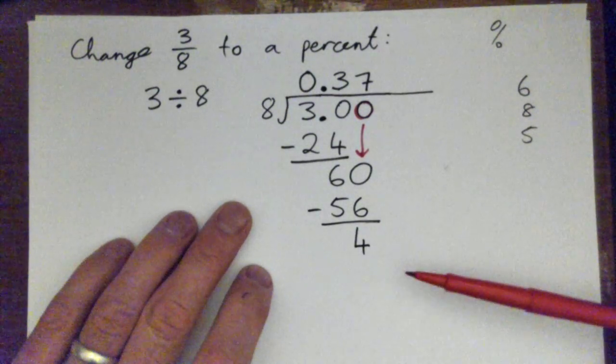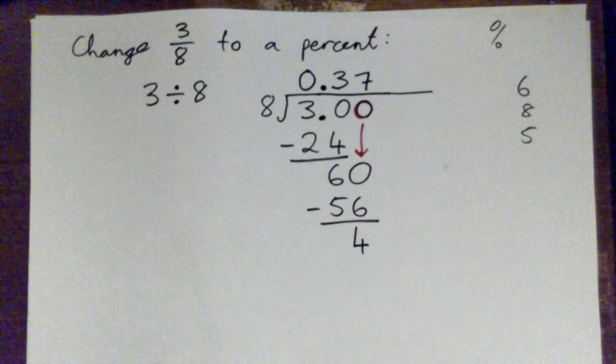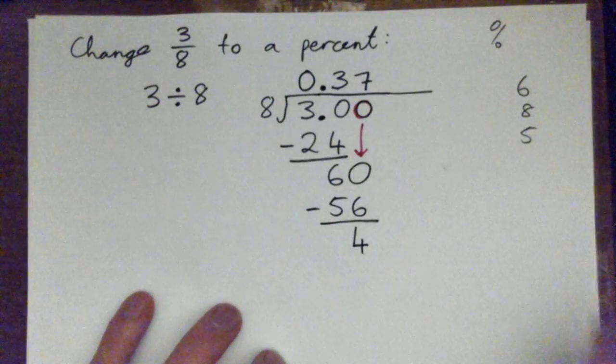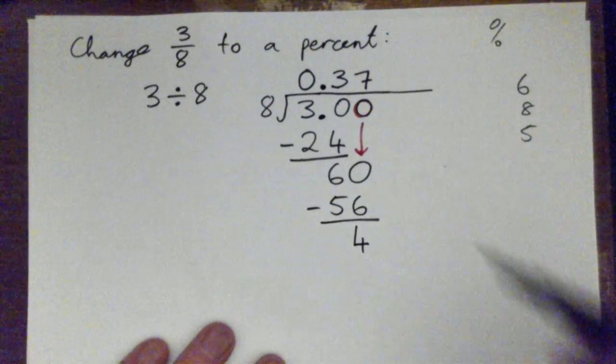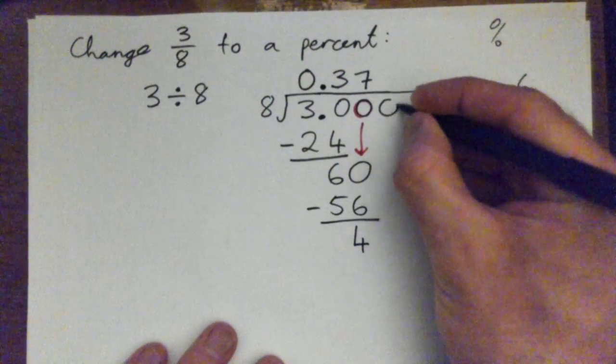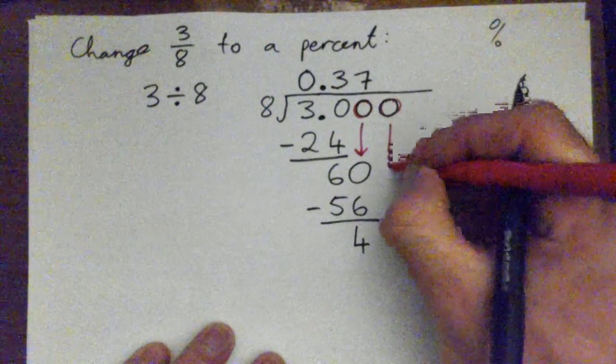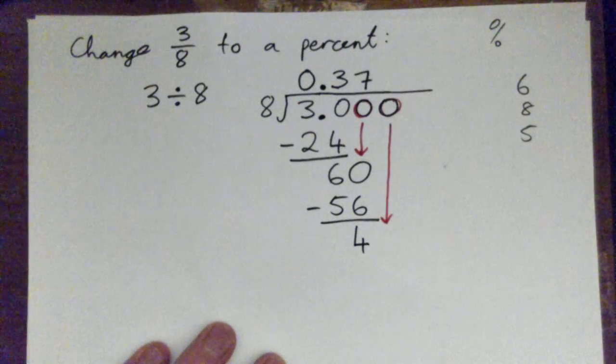But we still don't have remainder zero. Like, so until we have remainder zero, we're not done yet. So we have to keep going. So how do we kind of keep going? Good. Yeah. Add another zero. Perfect. So add another zero. Let's keep going. Bring that down. And that becomes forty.